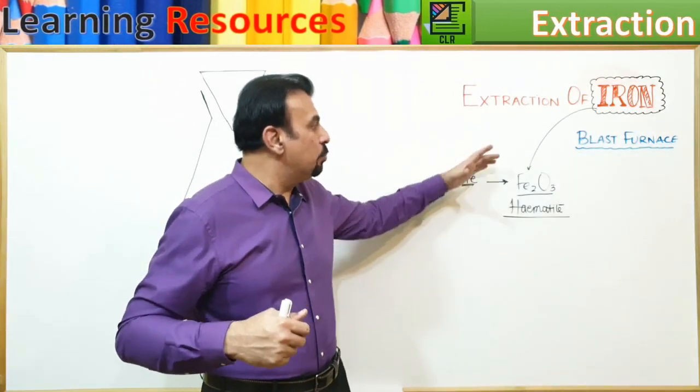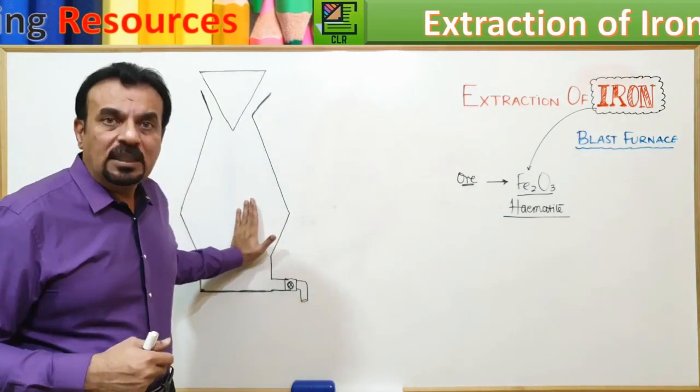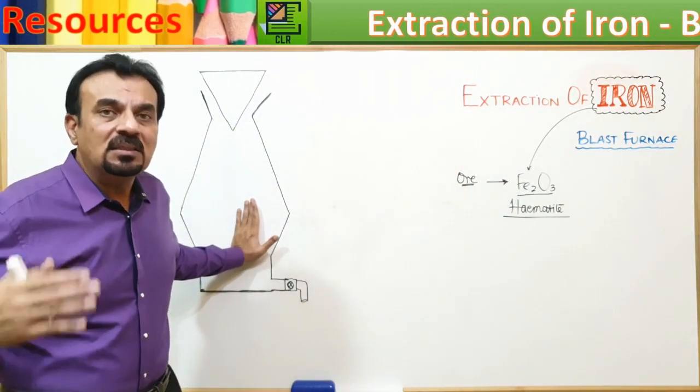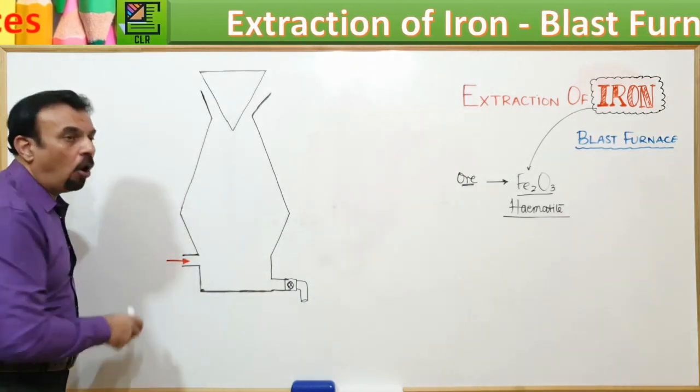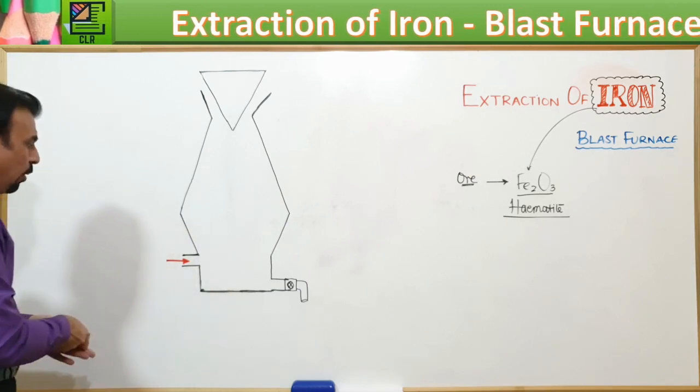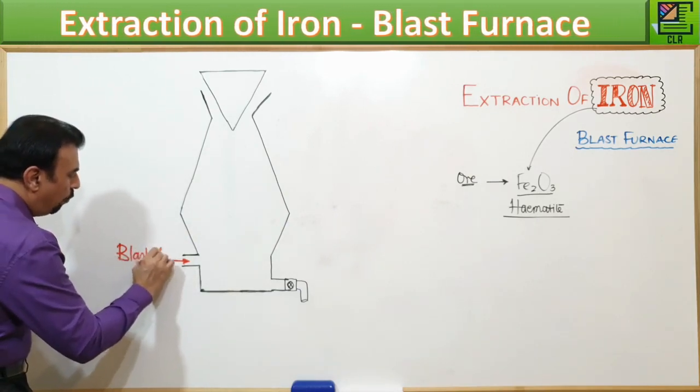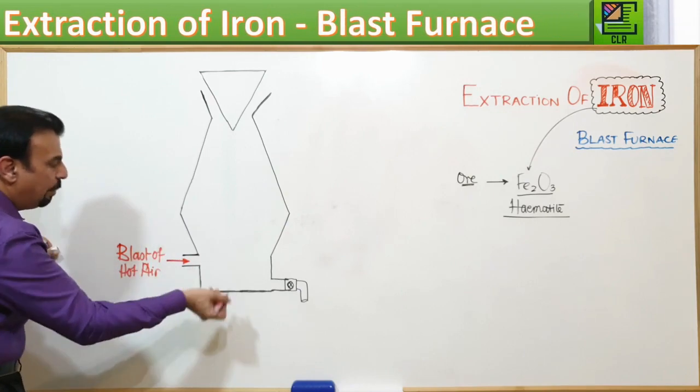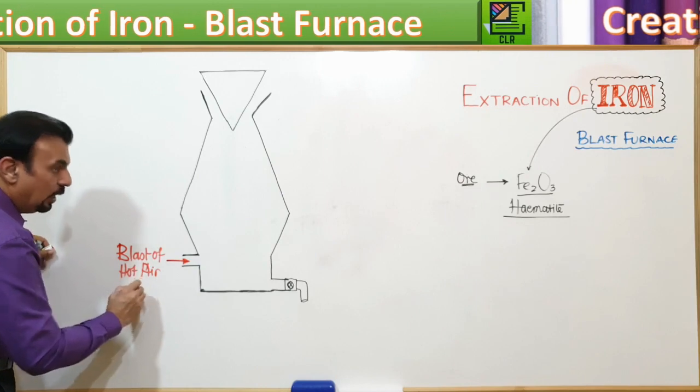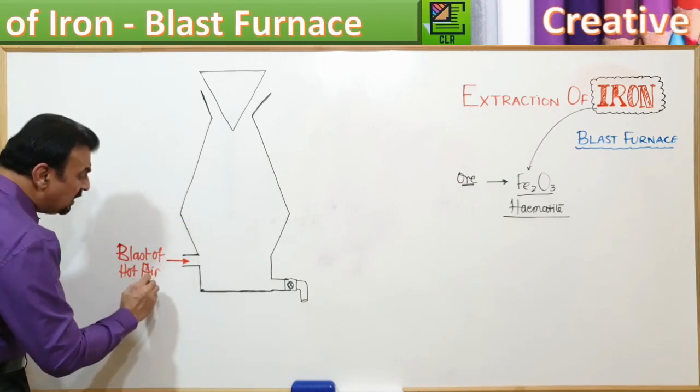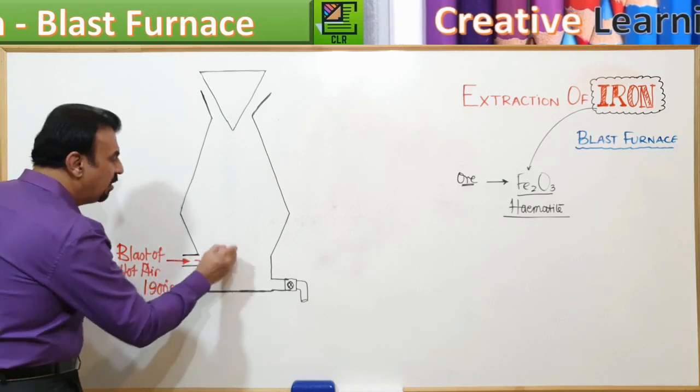How can we get the pure iron metal? This process which we use over here is actually using the blast furnace. In blast furnace, what happens is there is a blast of hot air introduced from the bottom. This is the blast of hot air coming in. This air is having a higher temperature.